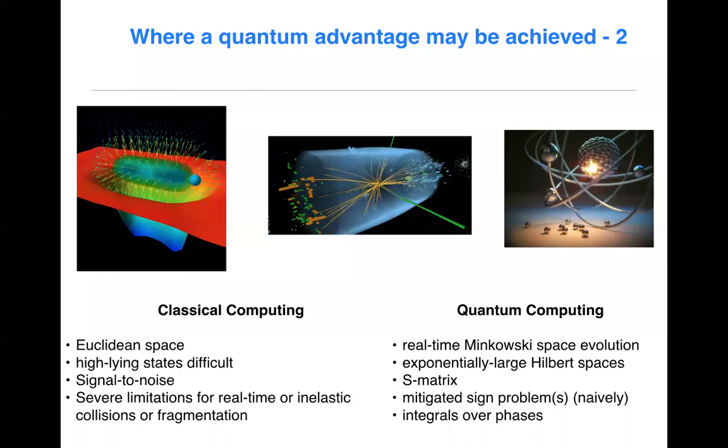So the tools we have today, classical computing, in the quantum field theory side, lattice QCD is a very successful enterprise. The computations are done in Euclidean space, and so this makes it difficult to access S-matrix elements of high-lying states. One can do low-lying states and ground states well, but inelastic channels and high-energy processes are essentially not possible. There's signal-to-noise problems one has to deal with in stochastic evaluation. There's severe limitations on real-time or inelastic processes.